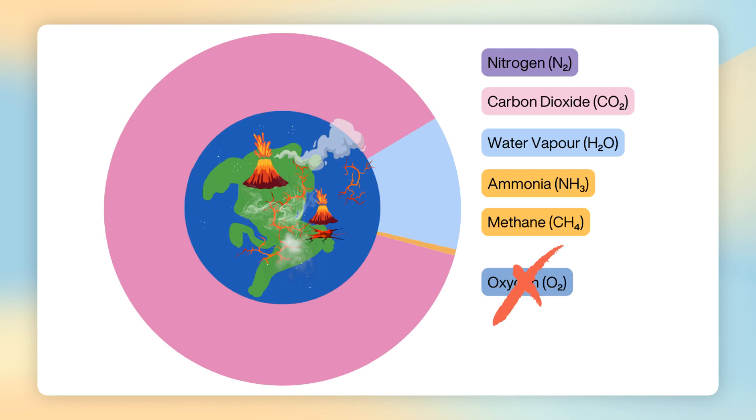So, when we think about the composition of Earth's early atmosphere, it was primarily a mixture of carbon dioxide, nitrogen, water vapour, methane, and ammonia. It's important to remember that this atmosphere contained little to no oxygen, which makes it drastically different from the oxygen-rich atmosphere we have today.